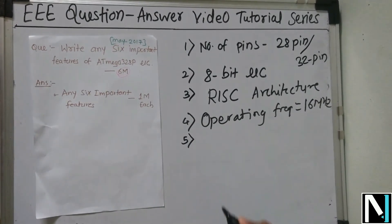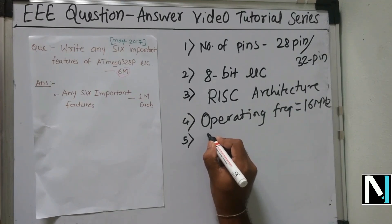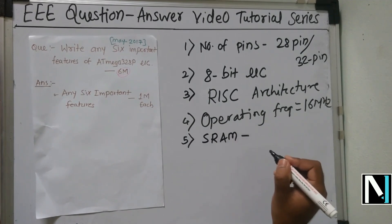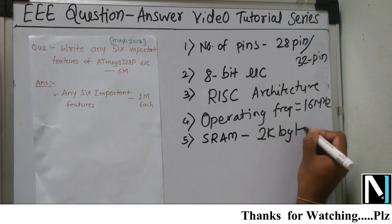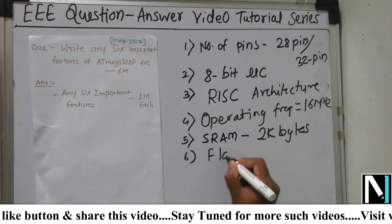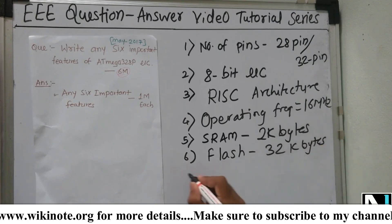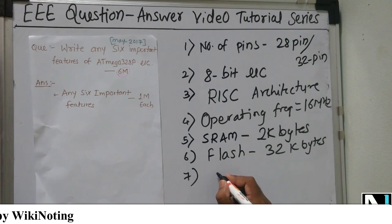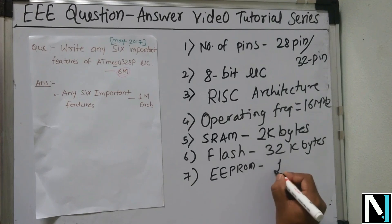Number five, the internal memory: the SRAM size is 2 kilobytes, the Flash memory is 32 kilobytes, and the EEPROM is 1 kilobyte.